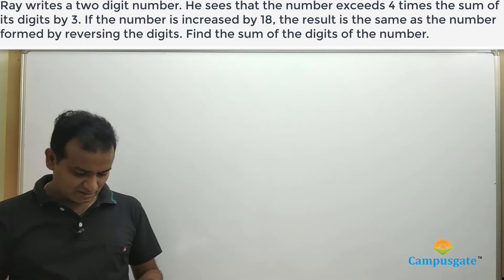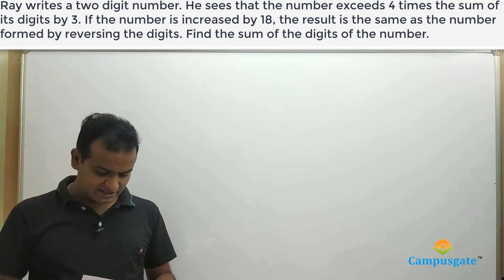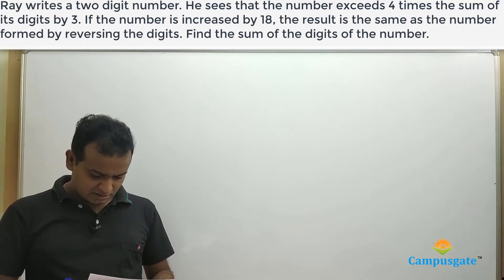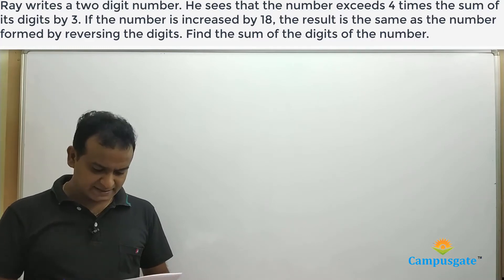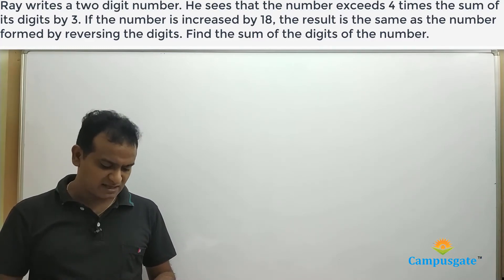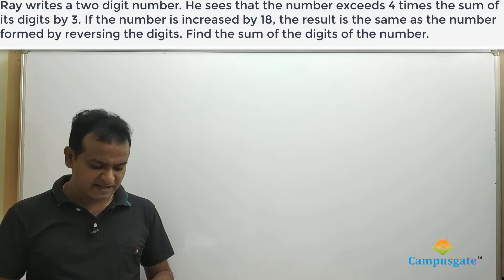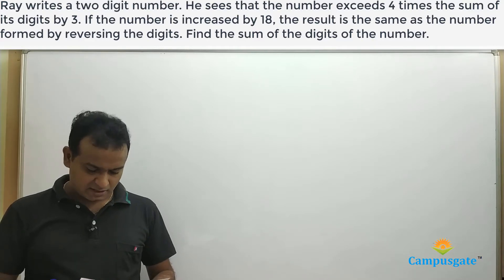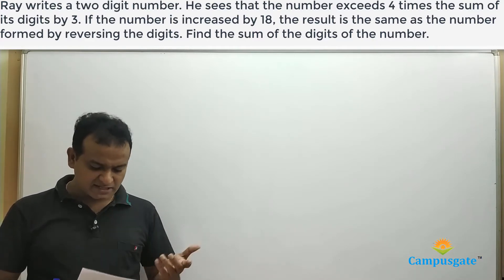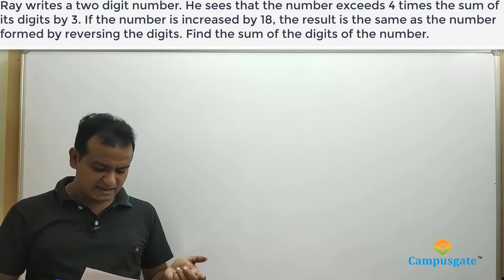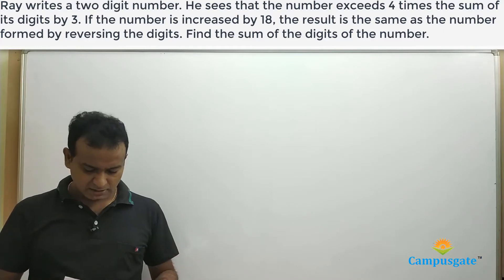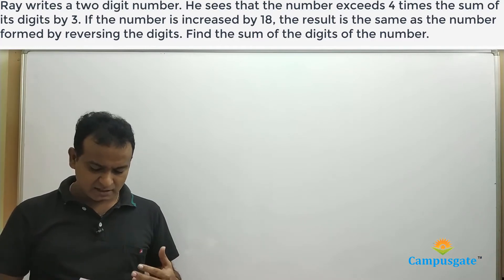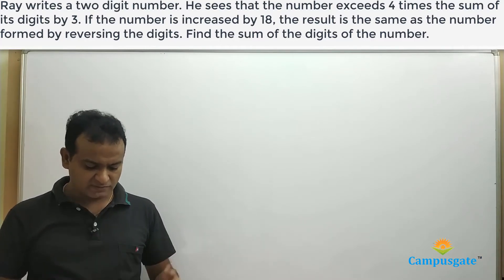In this question, it is given that Ray writes a two-digit number. He sees that the number exceeds four times the sum of its digits by three. And if the number is increased by 18, the result is the same as the number formed by reversing the digits. Find the sum of the digits of the number.